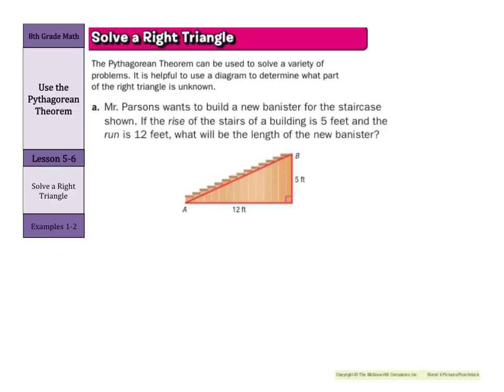And now as we do this on our own, Mr. Parsons wants to build a new banister for the staircase shown. If the rise of the stairs of a building is 5 feet and the run is 12 feet, sounds like slope, what will be the length of the new banister? Well, here's our right angle. Our legs, we call A and B. So we're going to call the 5 our A, and the 12 our B,